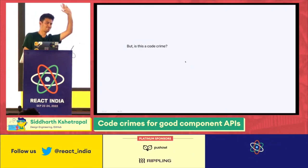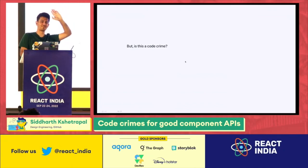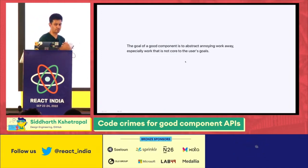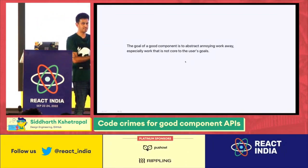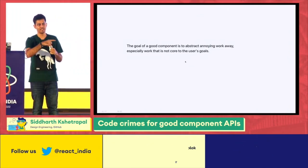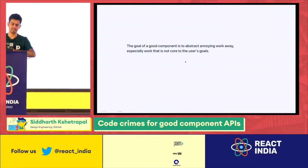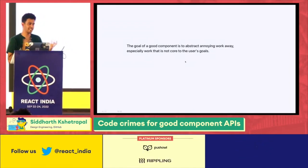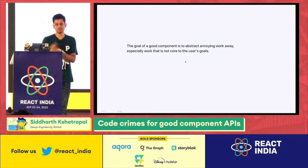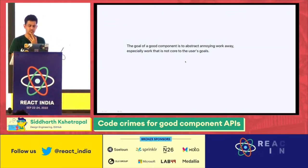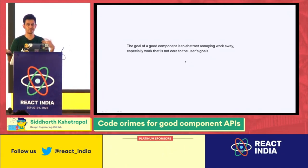Is this an anti-pattern? Absolutely. Is it a code crime? Yes. But the goal of a good component is to abstract annoying work away, especially work that is not core to the user's goals or expertise. The developer building the settings page shouldn't have to think about which group is open for the blue highlight. Also, they might be great at GraphQL and state management but might not be very good at accessibility and could miss the aria-current attribute. The more we abstract that extra work away, the better.